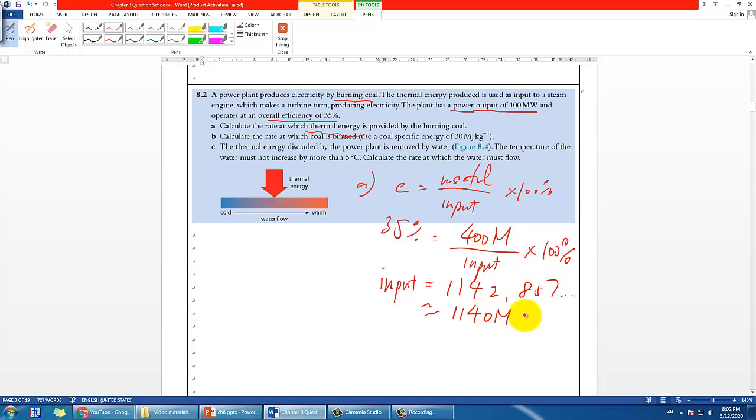So part B asks you to calculate the rate at which the coal is burned, given that this is the specific energy that you learned in a previous video. First thing you need to figure out is what is this unit that they are asking you to calculate - the rate at which it's being burnt. That should usually be kg per second, usually unless they're asking you volume, but usually referring to the mass, especially here you can see it's per kg, so it should be kg per second.